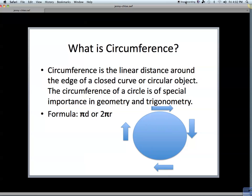Circumference is the linear distance around the edge of a closed curve or circular object. The circumference of a circle is of special importance in geometry and trigonometry. The formula is πd or 2πr.